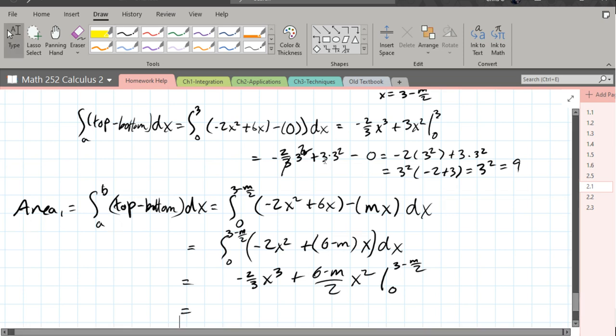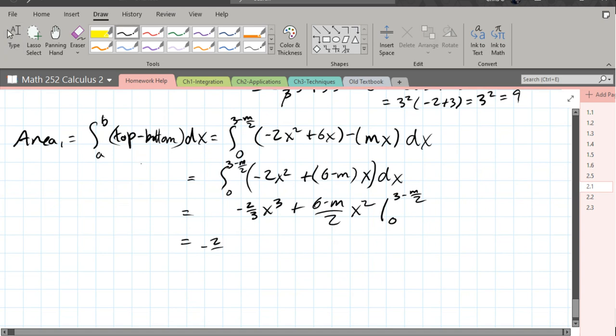So we have negative 2 thirds, 3 minus m over 2 cubed. This is going to be a cubic. That's not very fun. So this right here, if we split that up, we got 6 over 2 minus m over 2. This might be the thing that makes this not horrible algebraically. So that coefficient turns into 3 minus m over 2. Now we have another x squared, so we're plugging in 3 minus m over 2 squared. Now we plug in 0. If you look carefully, we got 0 and 0.